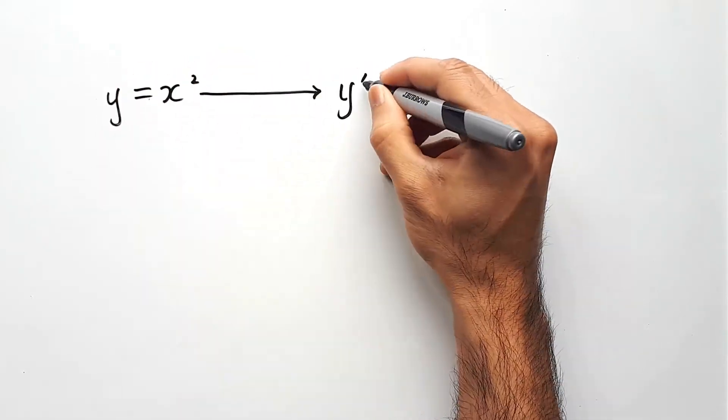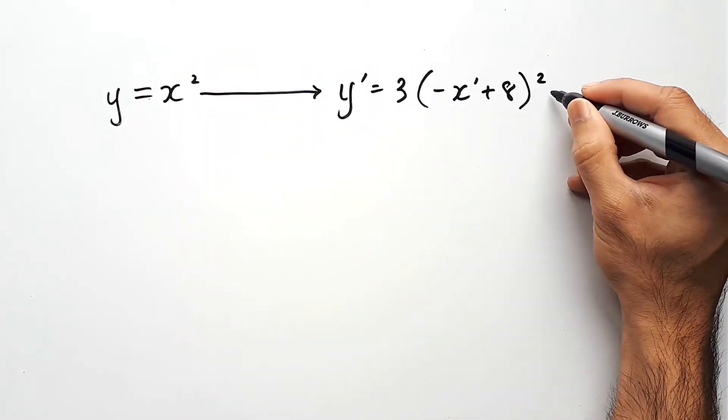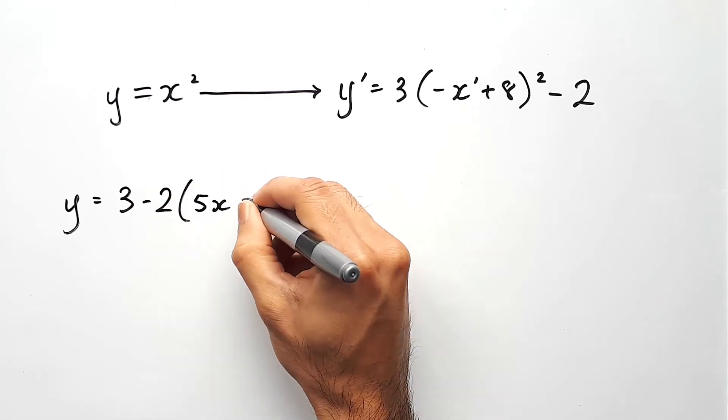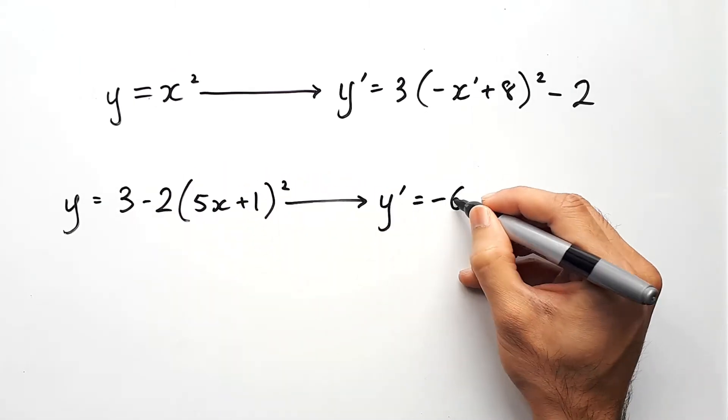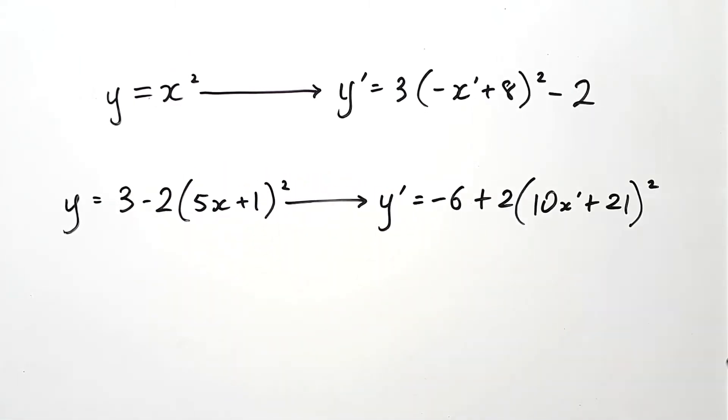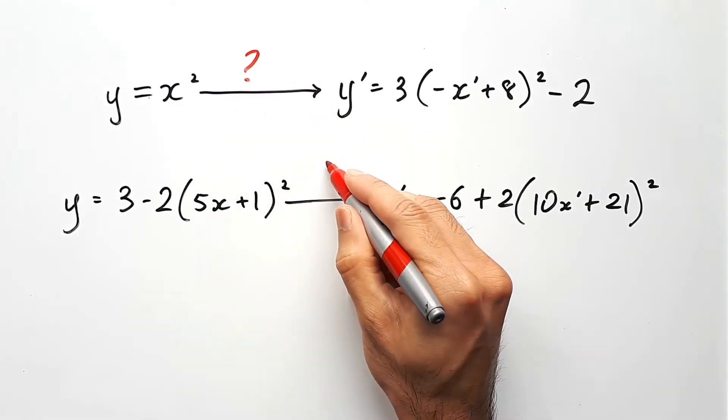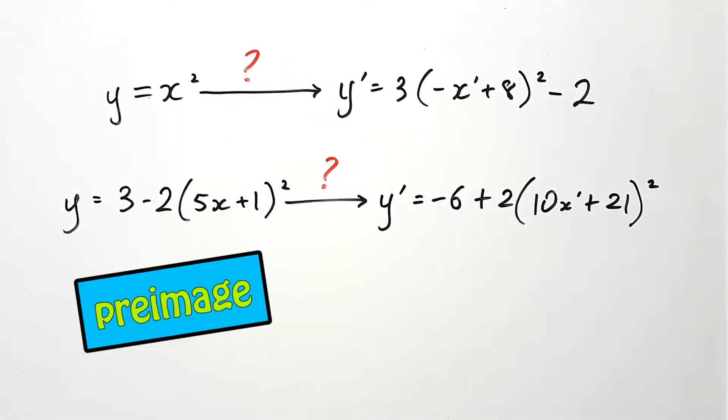In the last two videos, we saw how a pre-image can be used with some transformations to find an image, and how we can use an image with some transformations to find the pre-image. In this video, we're going to attempt to find the transformations to go from the pre-image to the image equation for both of these examples here.